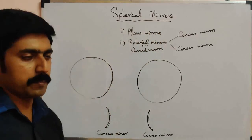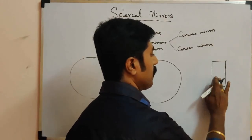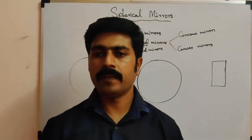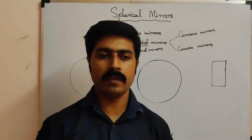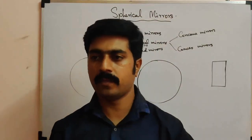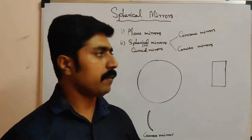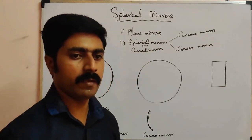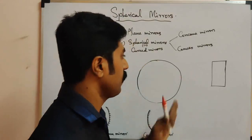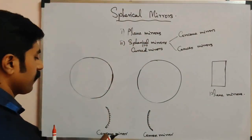Plane mirrors have a flat surface. The image height in a plane mirror should be equal to the height of the object — the image height is the same. It gives an erect, real image. Then in the case of a concave mirror, if we place an object close to it...